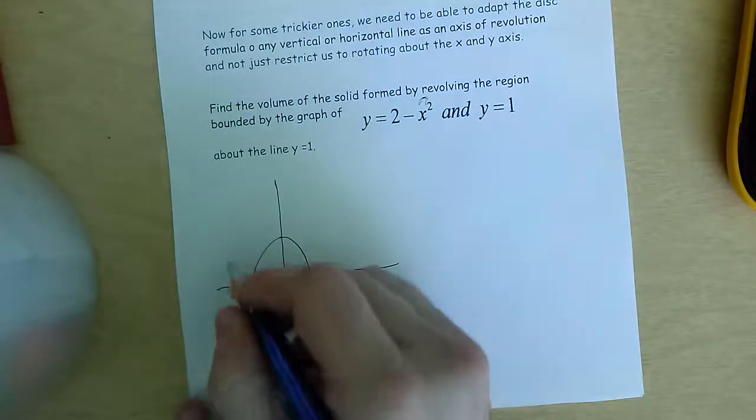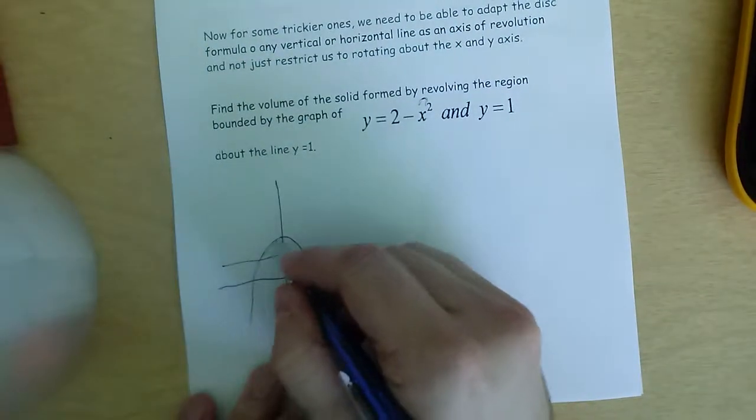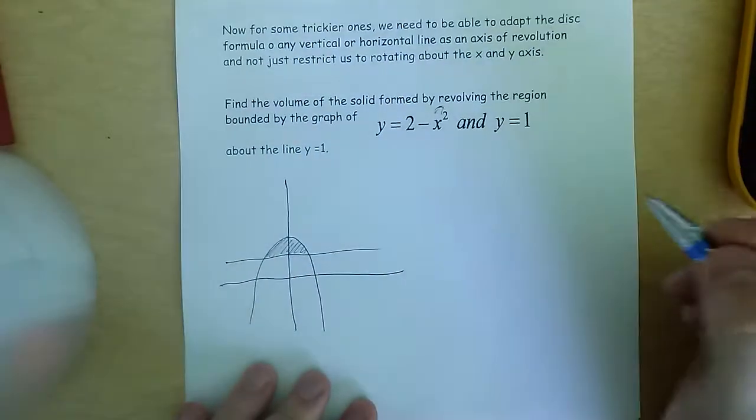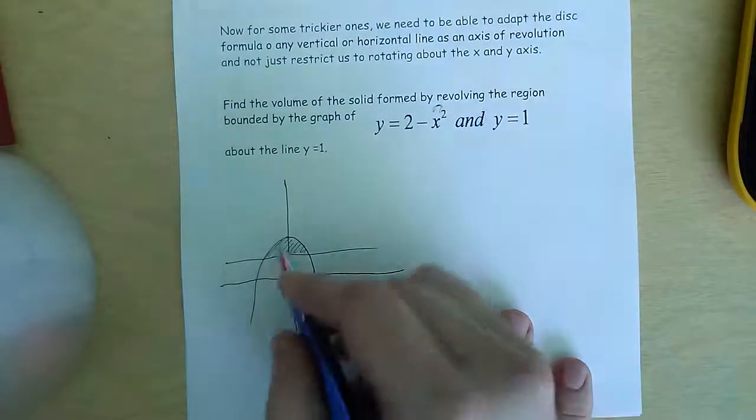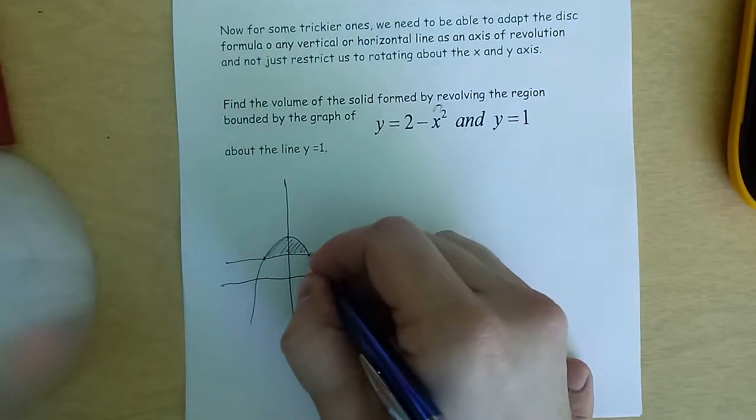And then the line y equals 1 about the line y equals 1. So this is enclosed by these two curves.